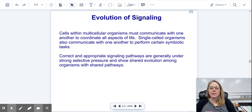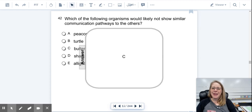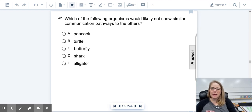Cells within multicellular organisms must communicate with each other to maintain life. Single cell organisms communicate with each other for symbiotic tasks. Bacteria, single cell organisms, will work together so they can protect each other and get food. So they're constantly signaling each other. You need these appropriate signal pathways to make that happen. Which of the following organisms would not likely show communication pathways to the others? A peacock, a turtle, a butterfly, a shark, or an alligator? Did you say butterfly? Good. Because everything else is going to be in the chordate family. They all have an endoskeleton. The butterfly is an arthropod with an exoskeleton. It's much smaller, so it's the most different. They're probably not going to have the exact same communication pathways as the others.